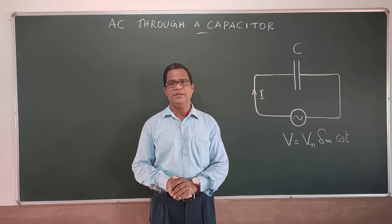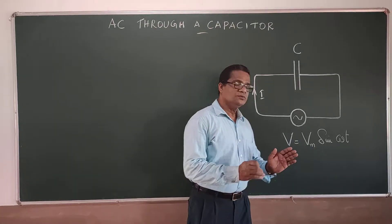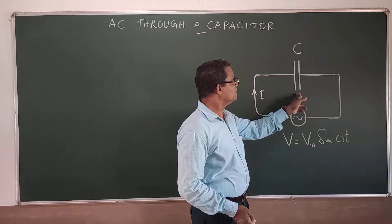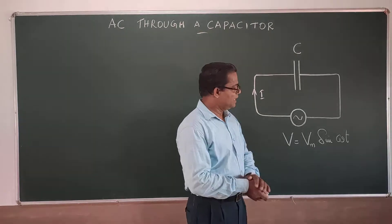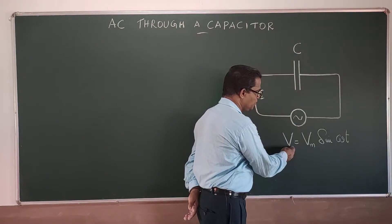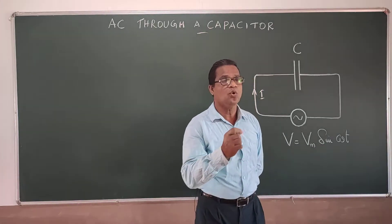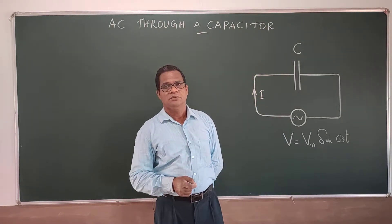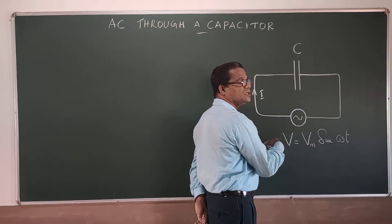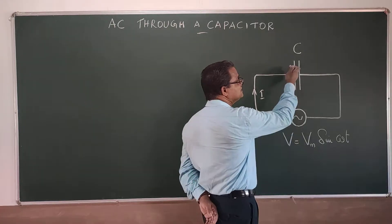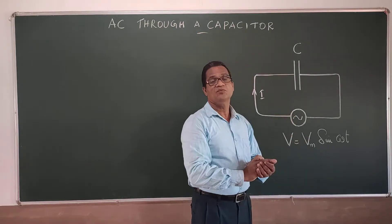AC through a capacitor. We consider a circuit with a capacitor of capacitance C — an uncharged one — connected across a supply of instantaneous voltage V given by Vm sin ωt. Here, current will be flowing through this circuit because of the charging and discharging of the capacitor according to the AC voltage.